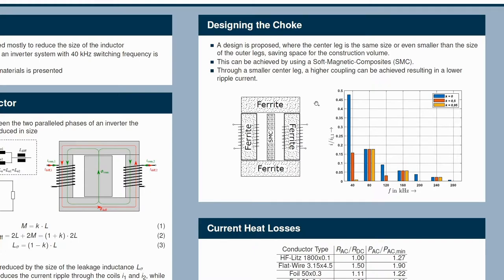So the soft magnetic composite has a higher saturation at about 0.8 to 0.9 tesla. So this way we can actually reduce it in size. We choose ferrite for the outer flux path to actually get a higher coupling coefficient.